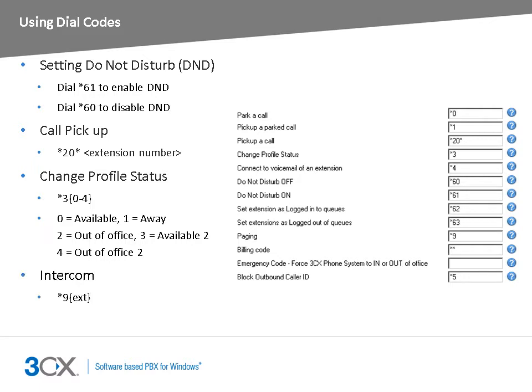Using the intercom feature, you can make an announcement to another extension without requiring the other party to pick up the handset. The audio is two-way and will be played on the other phone's speaker. To do this, dial star 9 followed by the extension number you wish to call. Note that the phone of the called party needs to support this functionality.